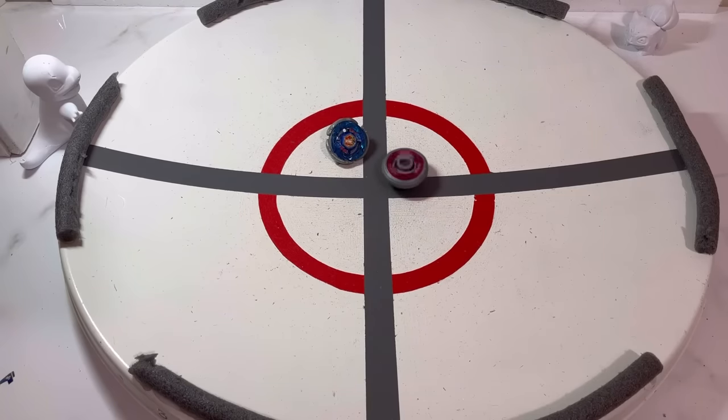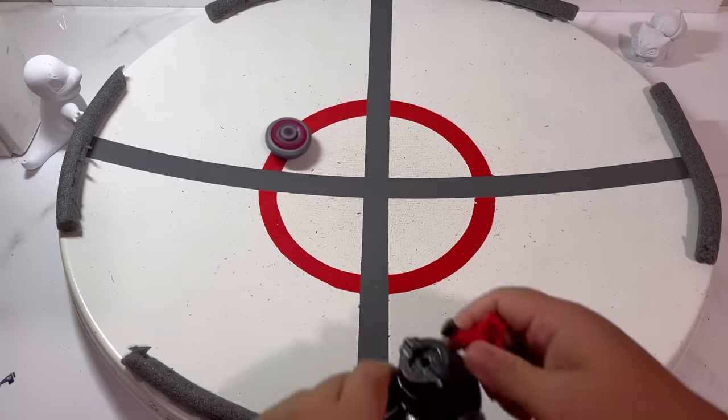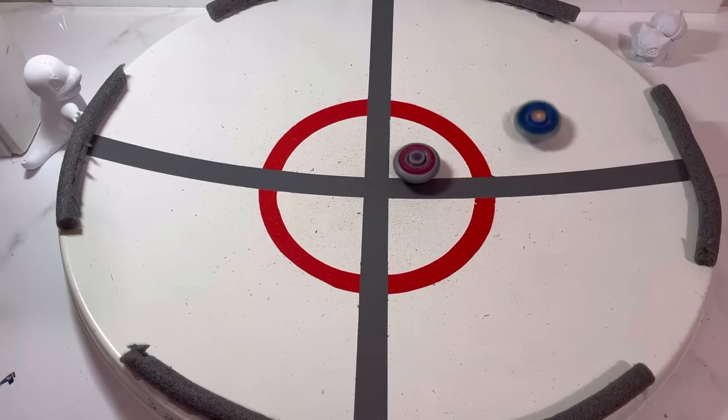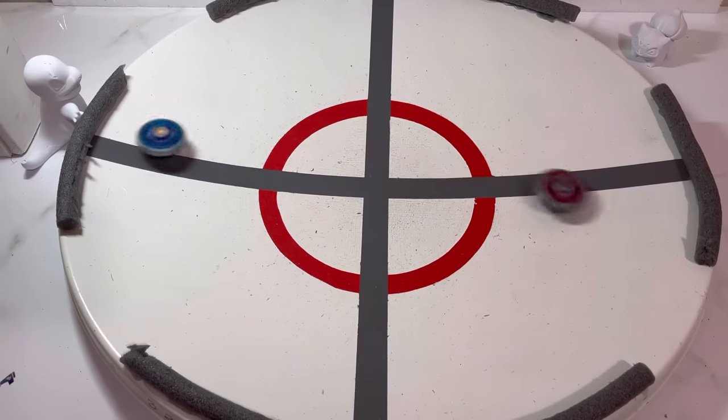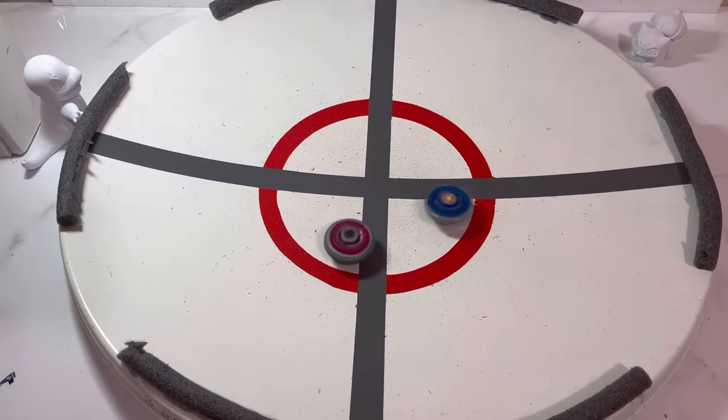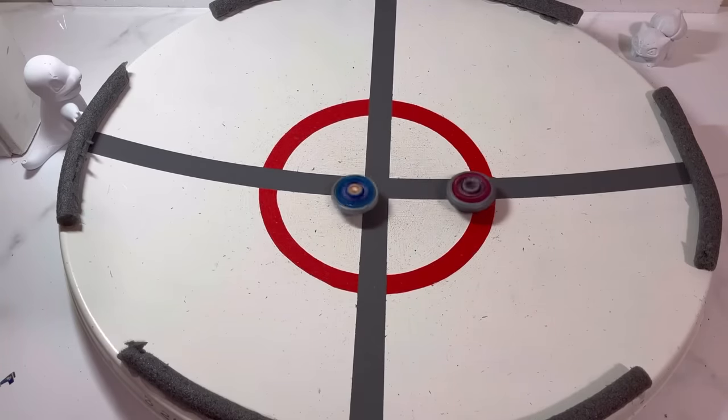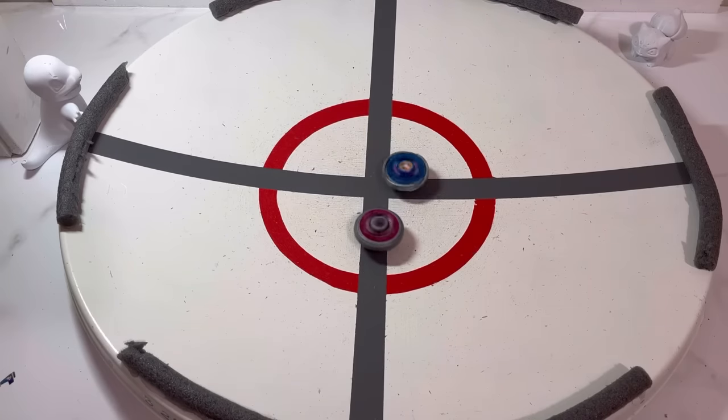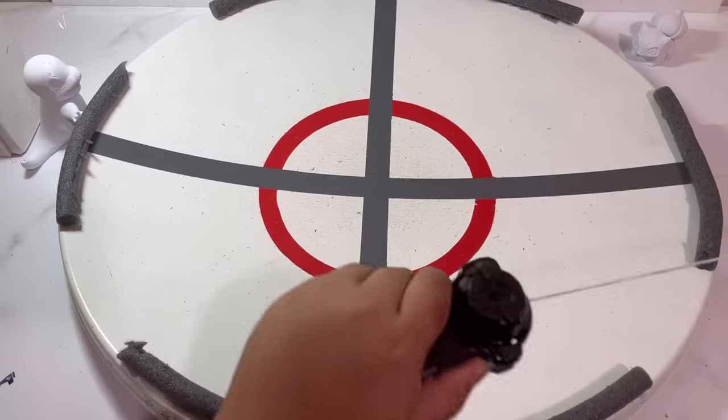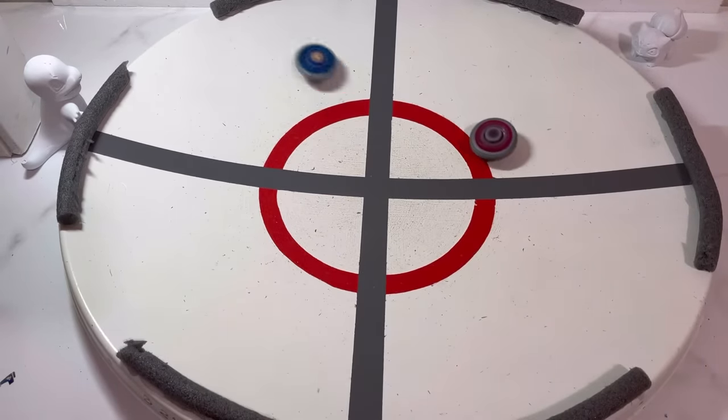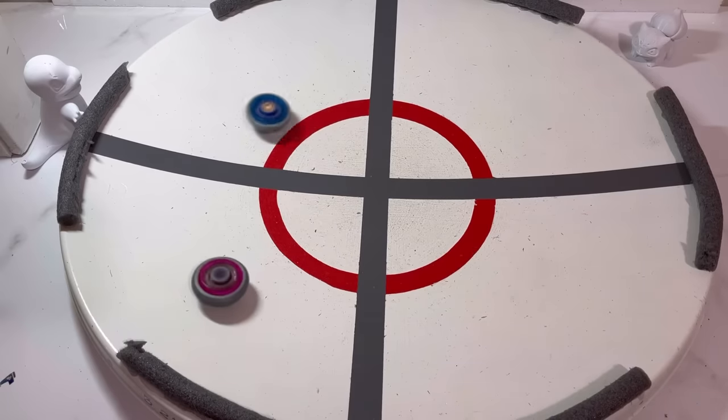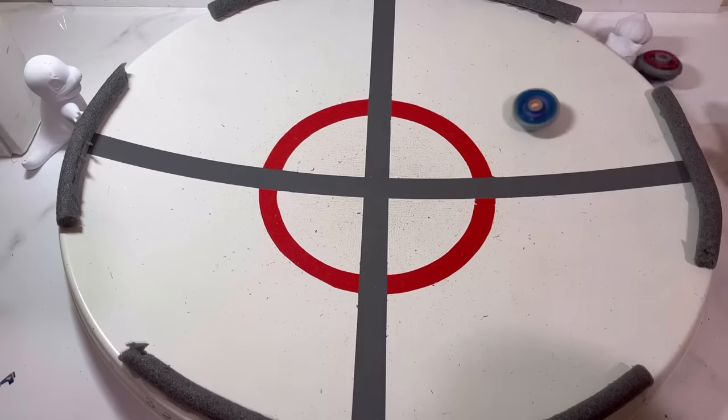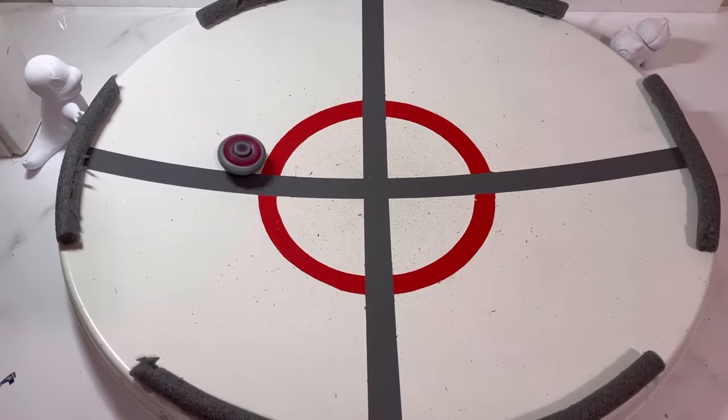Rock Ares takes the win with a good showcase of defense. The score is now 1-2. Storm Pegasus gets a great upper attack onto Rock Ares and knocks it over the wall. The score is now tied 2-2.